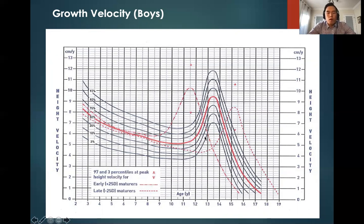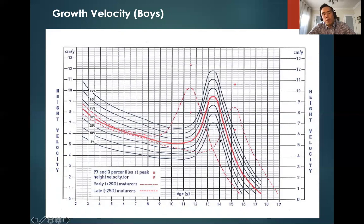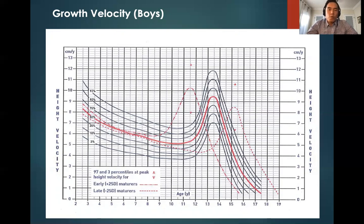If you see a patient growing less than 4 to 5 centimeters per year during the pre-pubertal period, that is considered abnormal. Then there is a period of pubertal growth spurt — a peak — followed by a slowdown. The two dotted lines on this graph represent children with precocious puberty, where the graph shifts to the left, and children with delayed puberty, where the graph shifts to the right, corresponding to the timing of their growth spurt relative to puberty.